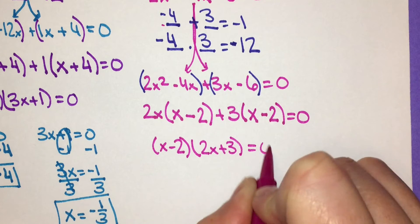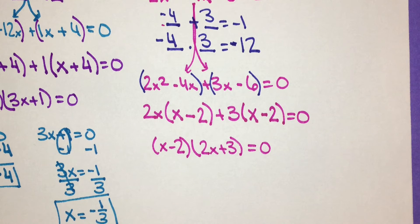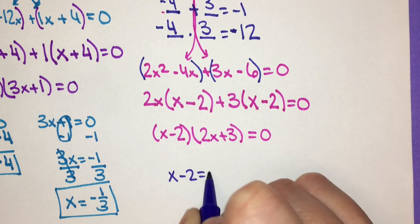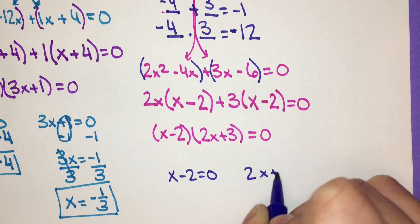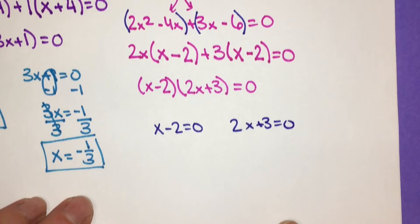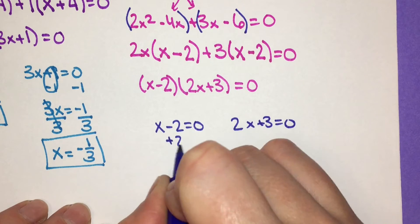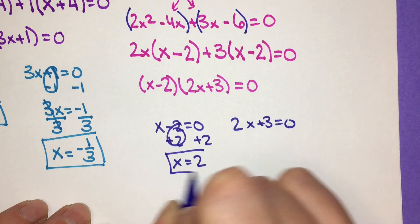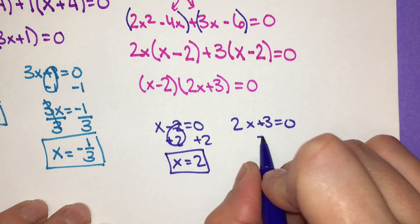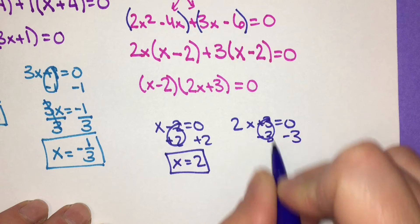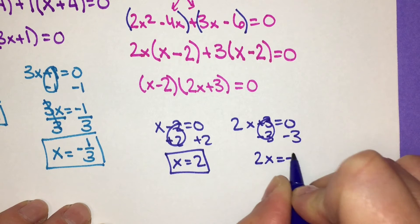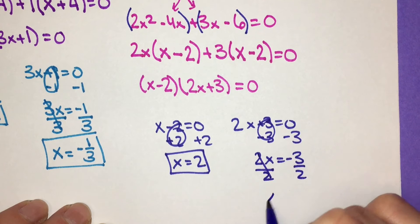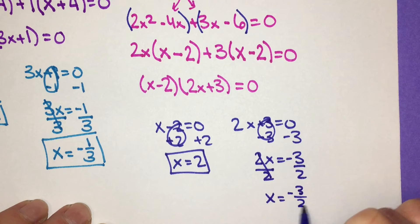That equals 0. Now I solve for x: x minus 2 equals 0 and 2x plus 3 equals 0. I add 2 to both sides to get x equals 2. On the other side, I subtract 3 from both sides to get 2x equals negative 3, then divide both sides by 2 to get x equals negative 3 halves.